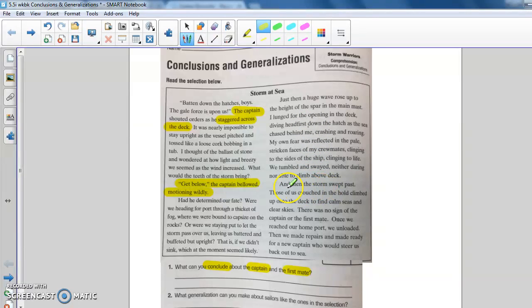And then the next time we see anything about the captain, it says, and then the storm swept past. Those of us crouched in the hold climbed up onto the deck to find calm seas and clear skies. There was no sign of the captain or the first mate. Once we reached our home port, we unloaded, then we made repairs and made ready for a new captain who would steer us back out to sea.